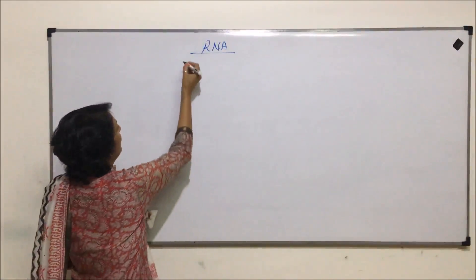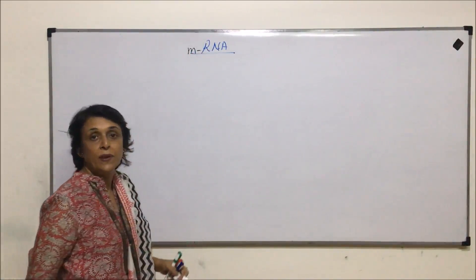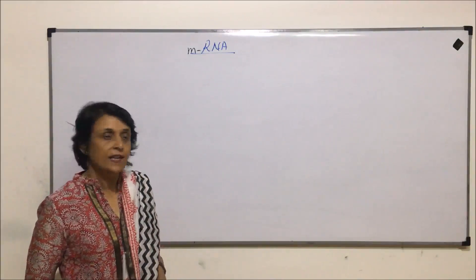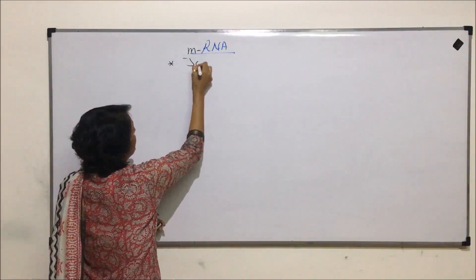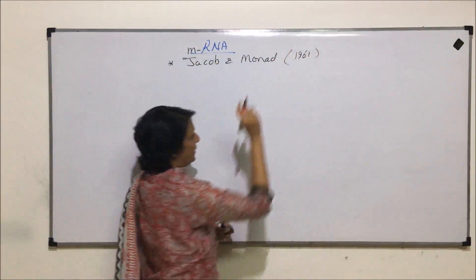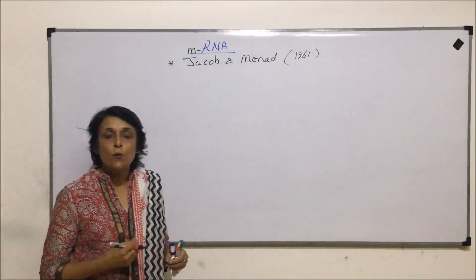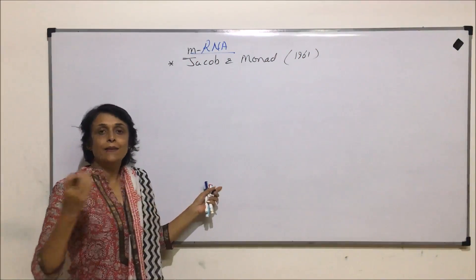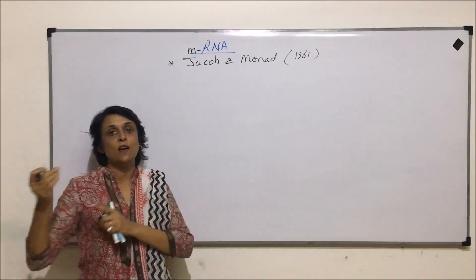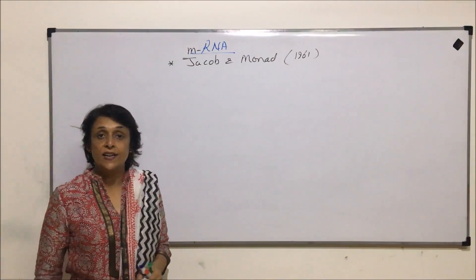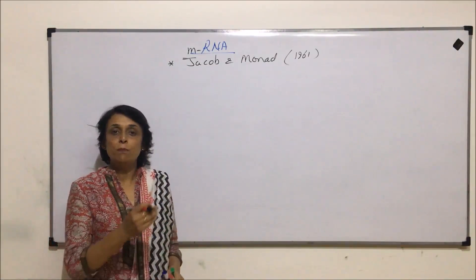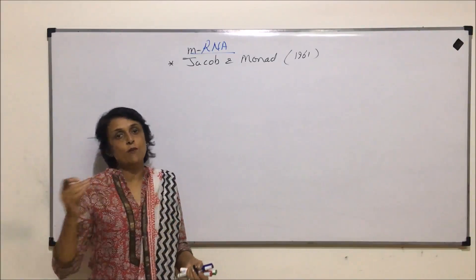Let us now talk about mRNA, messenger RNA. The concept that such an RNA existed was given by Jacob and Monod in 1961. Their idea was that DNA has the code and the ribosome is the place where protein is synthesized. So how does the message or those codes from DNA come to the ribosomes where they get translated into proteins? They proposed that there is a molecule synthesized on DNA that brings all that information from DNA for protein synthesis.